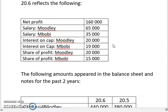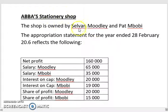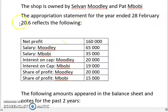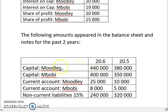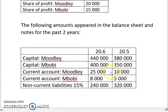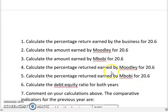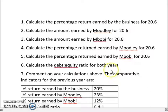We have a partner at ABBA's stationary shop — Salvin Moodley and Pat and Bobby. This is the appropriation account with net profit, partner's salary, interest in capital, and share of the profits. Then there's a comparison of the two years' capital, current accounts, and non-current liabilities. The question is very similar to 7.12, but you can also use this for 7.18 and 7.19 for return indicators.